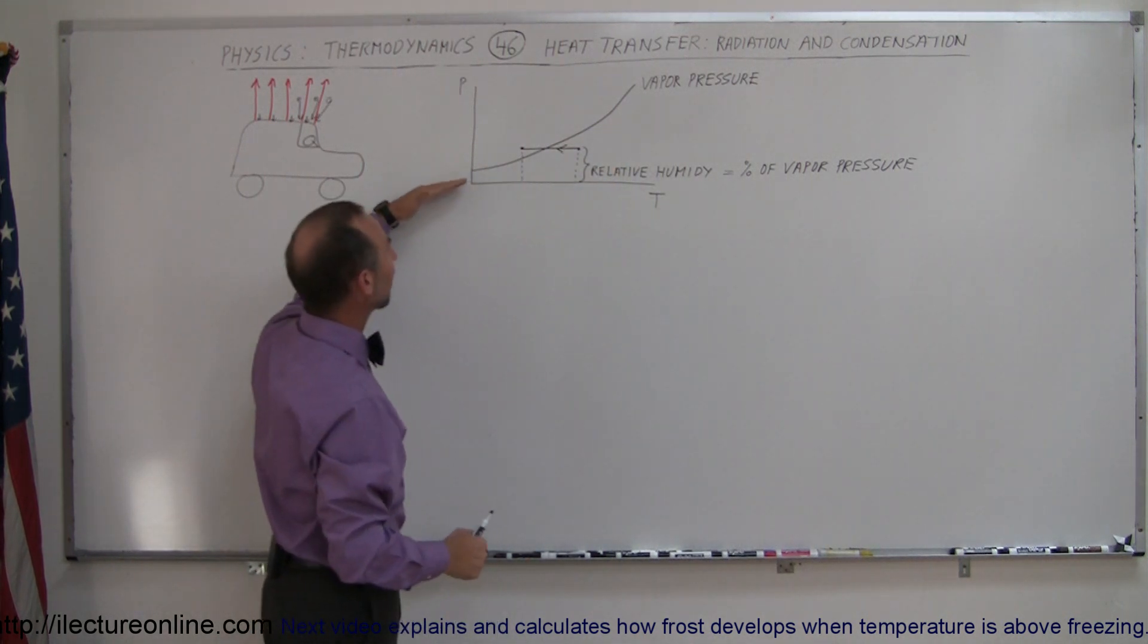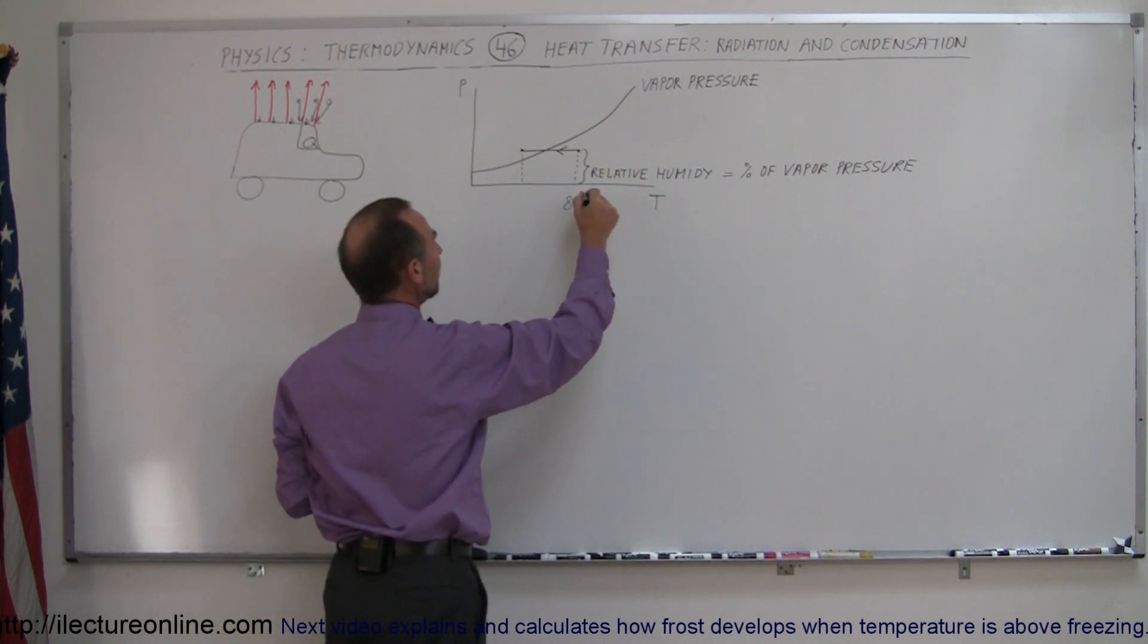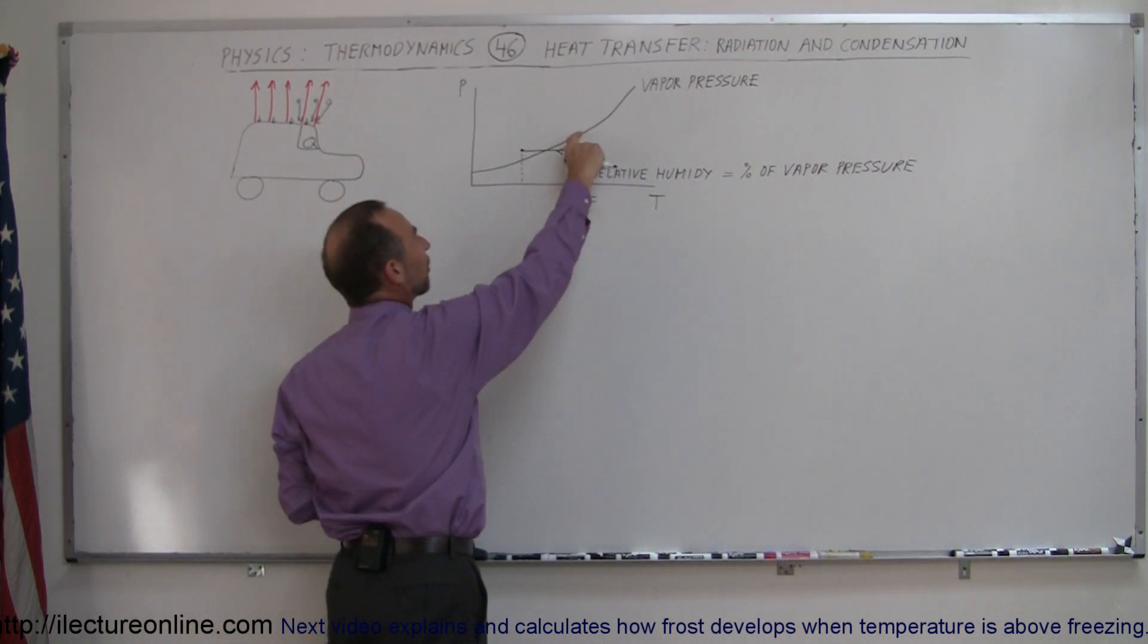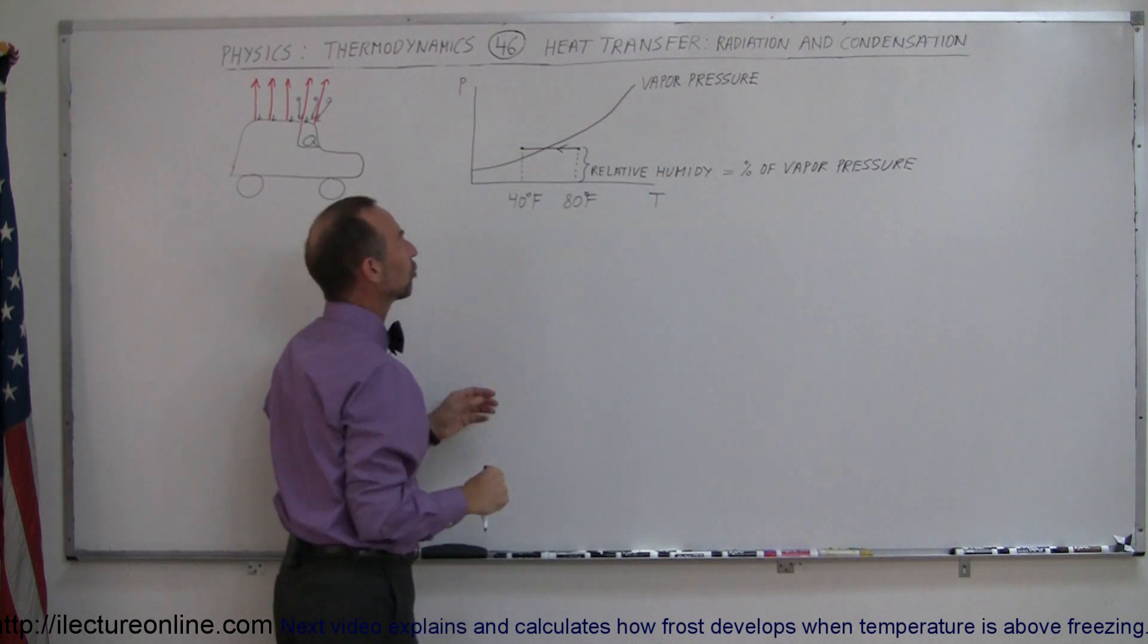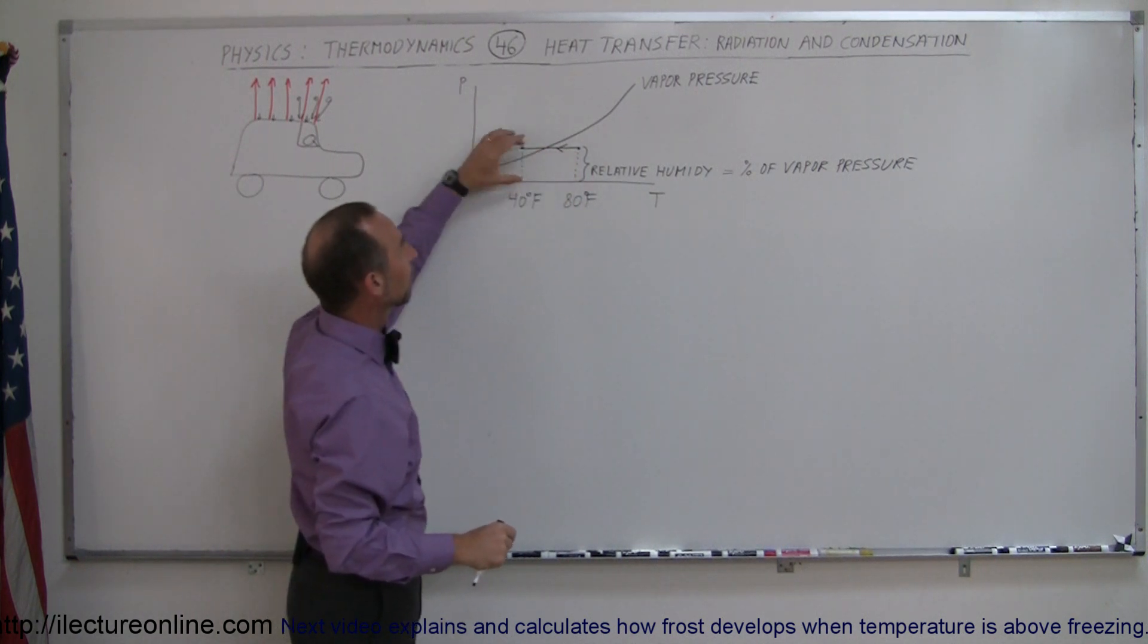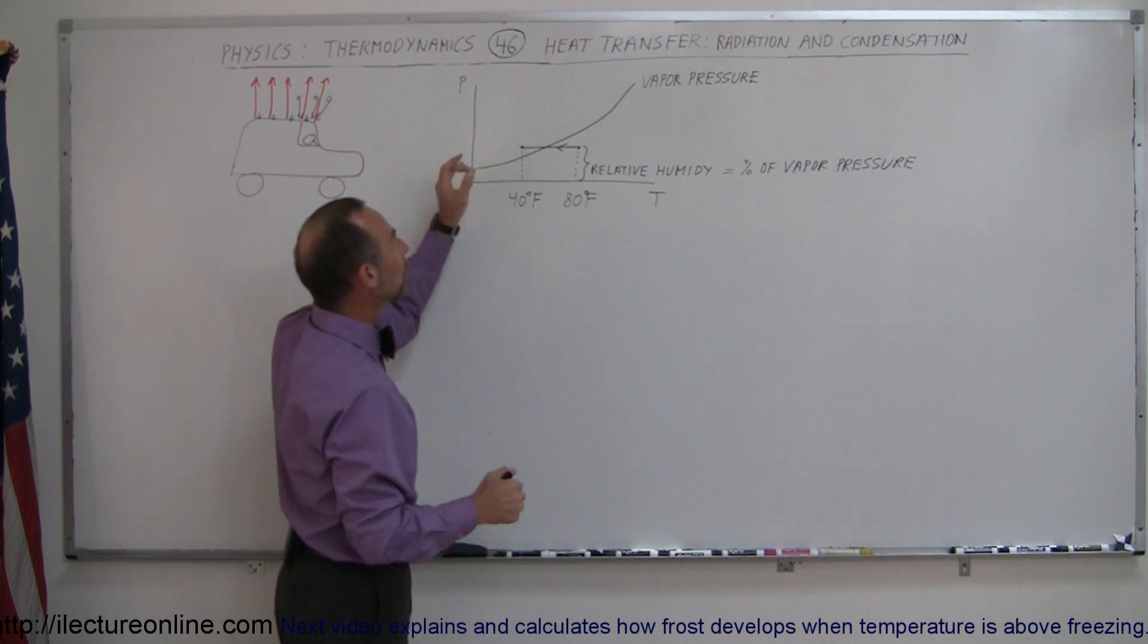So what that means is as the temperature is high, let's say at 80 degrees Fahrenheit, the air can hold a fair amount of moisture. But at 40 degrees Fahrenheit, let's say it cools down to 40 degrees Fahrenheit, the air can no longer hold that much moisture and any moisture in the air that is above what the atmosphere can hold will condense.